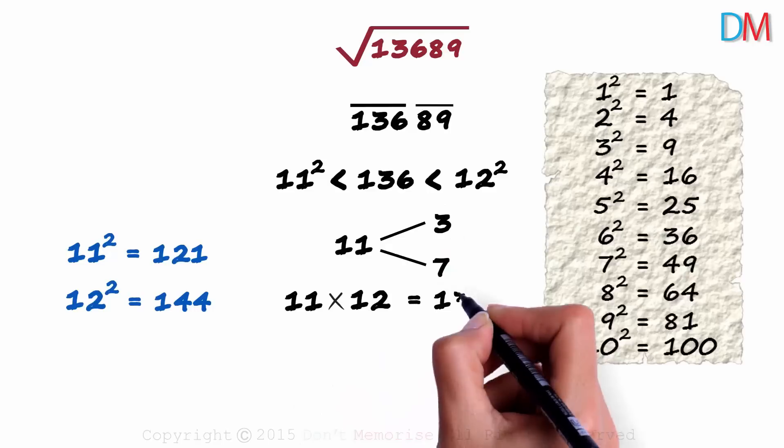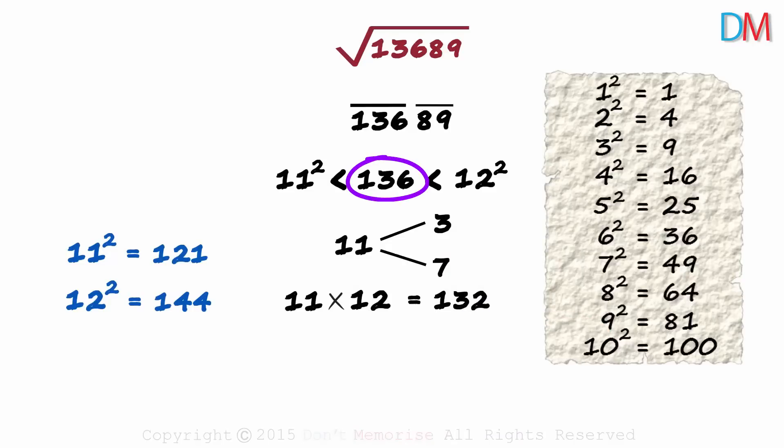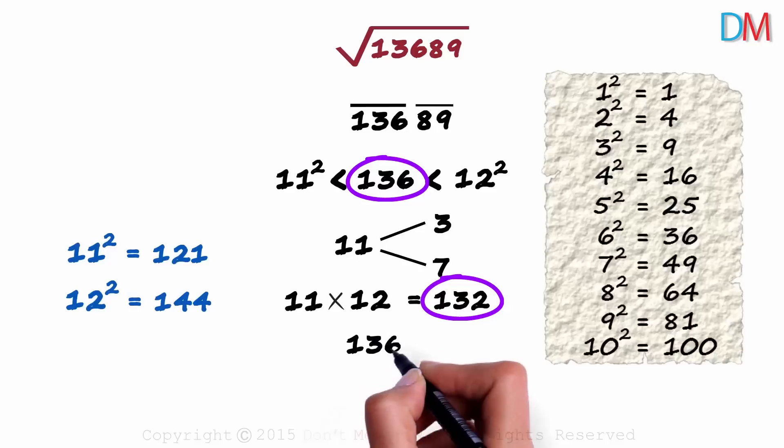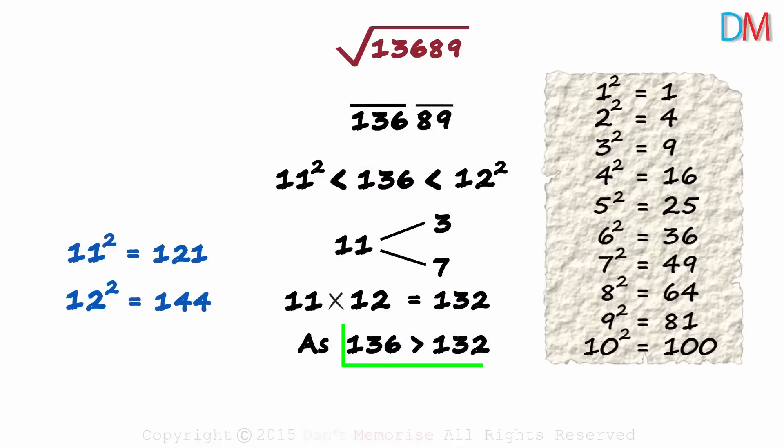That equals 132. Now this number in the middle is greater than 132. 136 is greater than 132. As 136 is greater than 132, we choose the larger of the two. The square root will equal 117 and not 113.